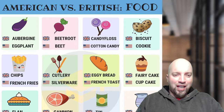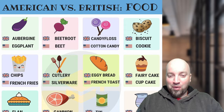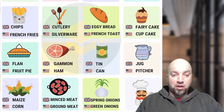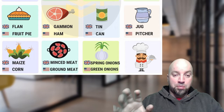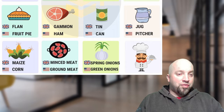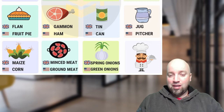Next one is 'eggy bread' and 'french toast' — we would say 'french toast,' I have never heard 'eggy bread.' My daughter Nelaine Winchester is in the chat, hi! Next one: 'fairy cake' and 'cupcake' — yes, we would follow along with the American and say 'cupcake.' So there are a few that we do say like the British, but mostly it is just like the Americans. Next one: 'flan' and 'fruit pie' — we would say just like the Americans: 'fruit pie.'